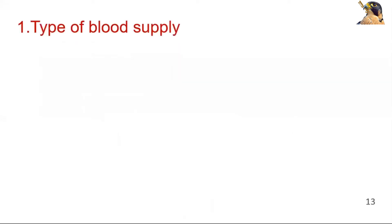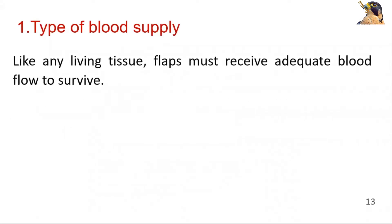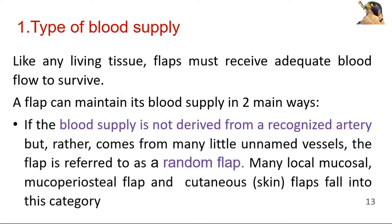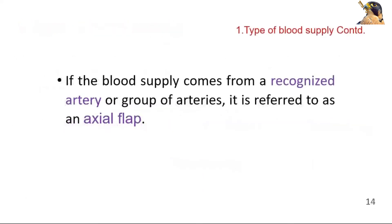The survival of a graft depends upon an adequate blood supply, and a flap can maintain its blood supply in two main ways. If the blood supply is not derived from a recognized artery, then this is a random pattern flap. Many local flaps fall in this category. If the blood supply comes from a recognized artery or a group of arteries, it is referred to as an axial flap.